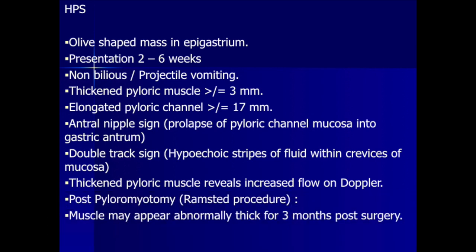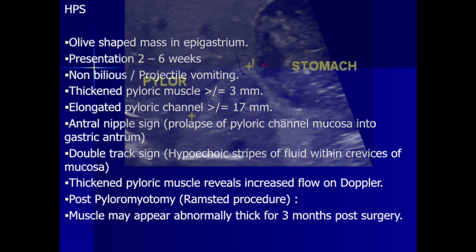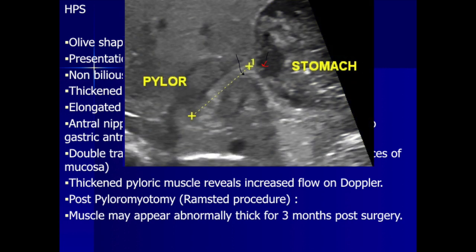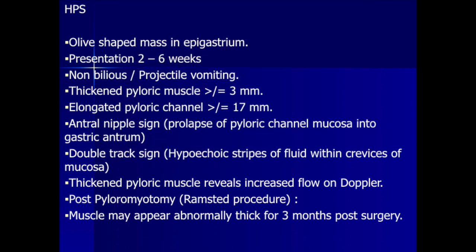The answer is hypertrophic pyloric stenosis. The first picture showed the olive-shaped mass in the epigastrium. Presentation is at about two to six weeks of life with non-bilious projectile vomiting. Diagnostic criteria include thickened pyloric muscle greater than or equal to three millimeters and elongated pyloric channel greater than or equal to 17 millimeters. The antral nipple sign represents prolapse of pyloric channel mucosa into the gastric antrum, and the double track sign is due to hypoechoic stripes of fluid within mucosal crevices. Post-Ramstedt procedure, the muscle may appear abnormally thick for up to three months, which does not necessarily indicate surgical failure.